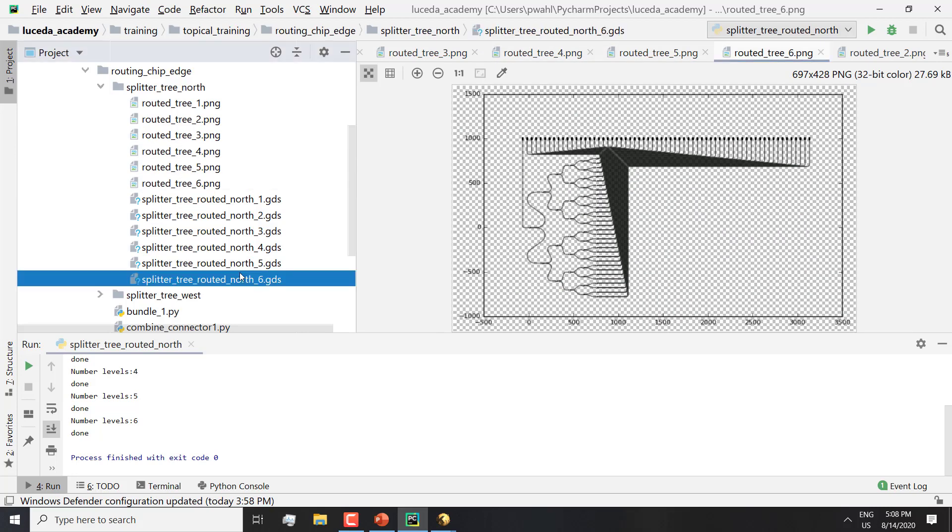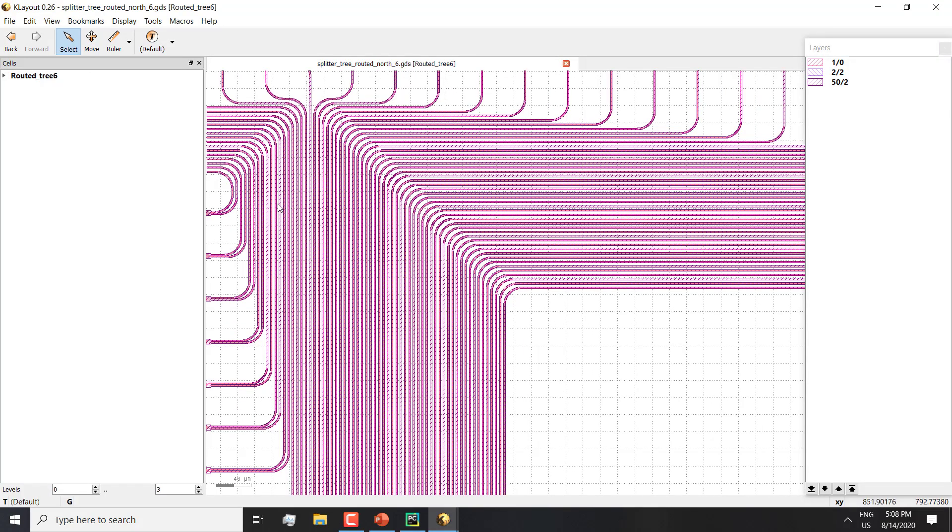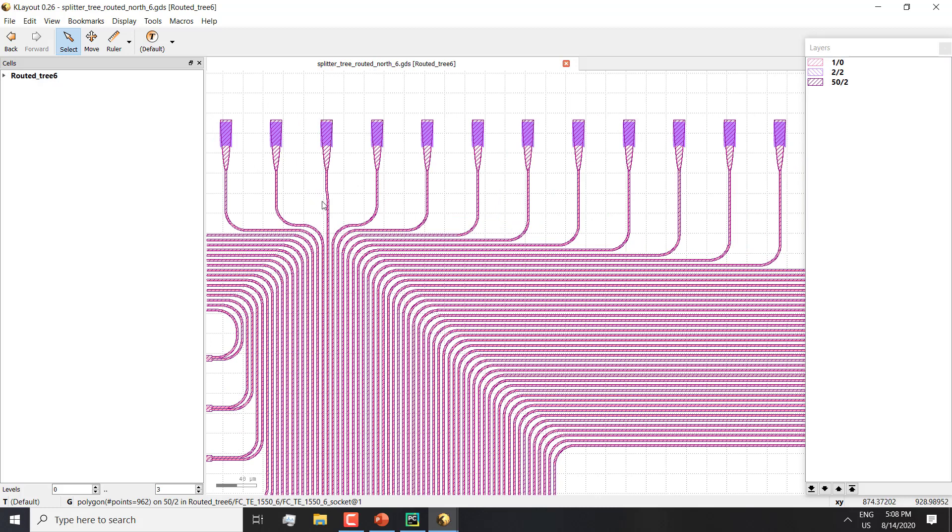Similarly, we can explore the GDSs of this actual routing, where you see that the waveguides are neatly spaced, and S-bends are used when a full Manhattan is not possible.